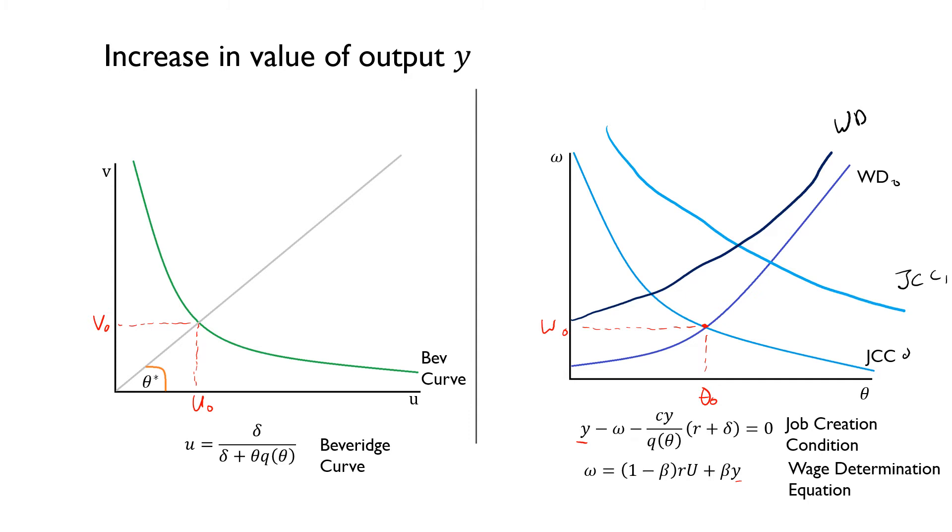What will happen is that we're going to end up at a higher labor market tightness and a higher wage here. The reason why this wage determination equation does not necessarily dominate or match our job creation condition is because we have this beta term on our wage determination equation. We've moved from theta naught to theta one and W naught to W1. This story about our labor market tightness is going to be important for drawing out what happens on our left-hand curve.